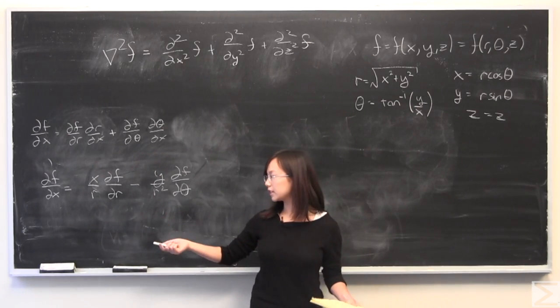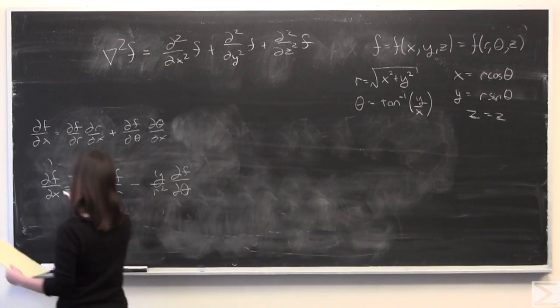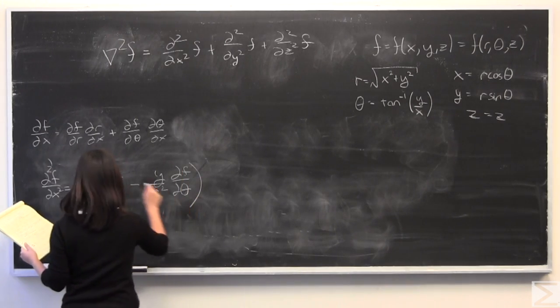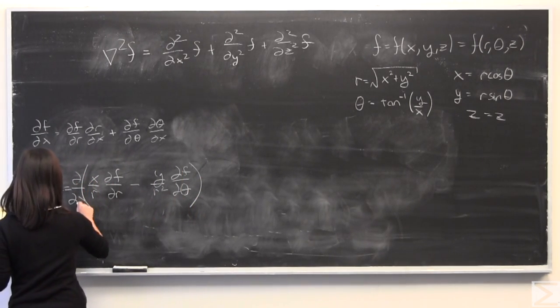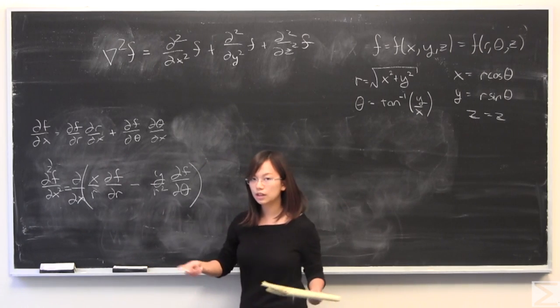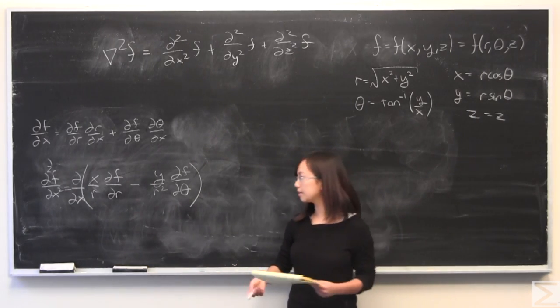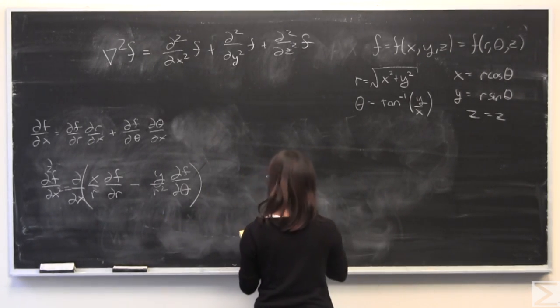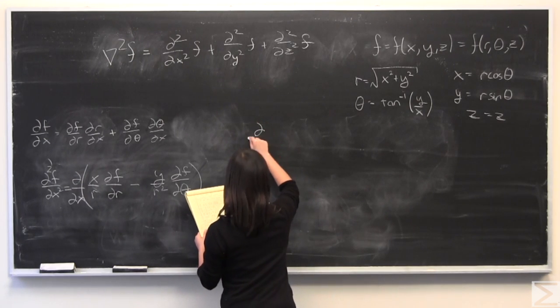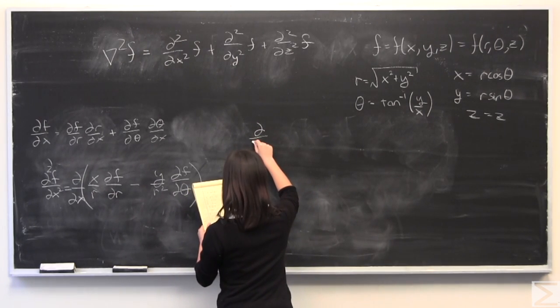If we want to take the second partial derivative, it's pretty simple. You just need to keep track of a lot of product rules and things like that. If you do that correctly, it should end up straightforward.